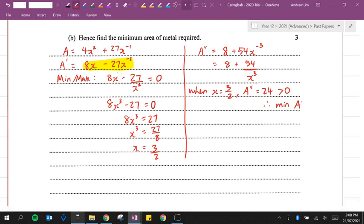Okay, so the minimum area required. Minimum area required is when x equals 3 over 2. So we have 4 times 3 over 2 squared plus 27 times 3 over 2 to the power of negative 1. Okay, and I just used this.